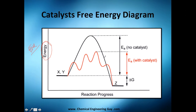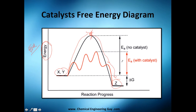Let me show you the energy diagram — this is about free energy, not enthalpy. Reactants X and Y need to reach a high-energy transition state before forming product C; they need to collide and crash in order to start reacting. Once reacting, energy is liberated. If you add a catalyst, you need less energy — the maximum energy required can be almost half of what it was without the catalyst.